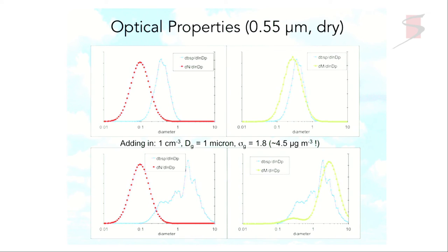We do want to know a lot more about these larger particles because when we think about how they interact with droplet formation, those are the ones presumed to grow initially into the larger droplets, creating spread in the droplet size distribution and helping to initiate precipitation. And as will be talked about later, this is also the size range where a lot of ice nucleating particles are. So until we characterize this better and understand that mode better, it would be difficult to address some of those key questions.